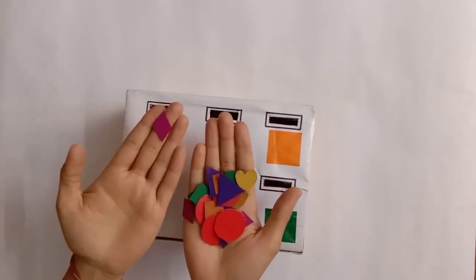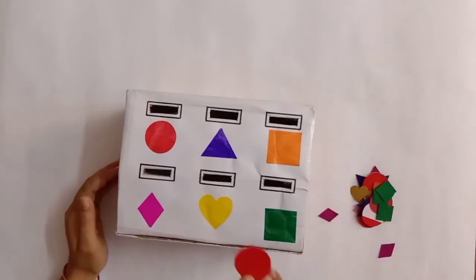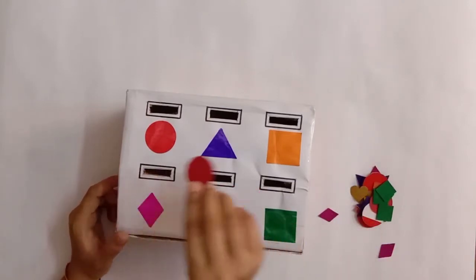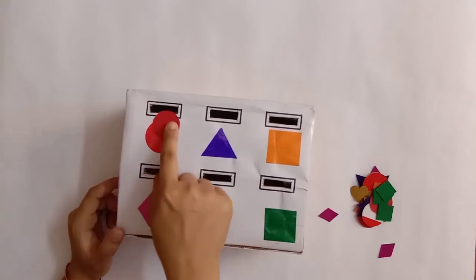So this is circle and then diamond and likewise all other shapes. Now the child picks one card, for example this is circle, so he'll find out where the circle is out of all the mentioned shapes. So here the circle is, now he will put it in the rectangular hole above it like this.